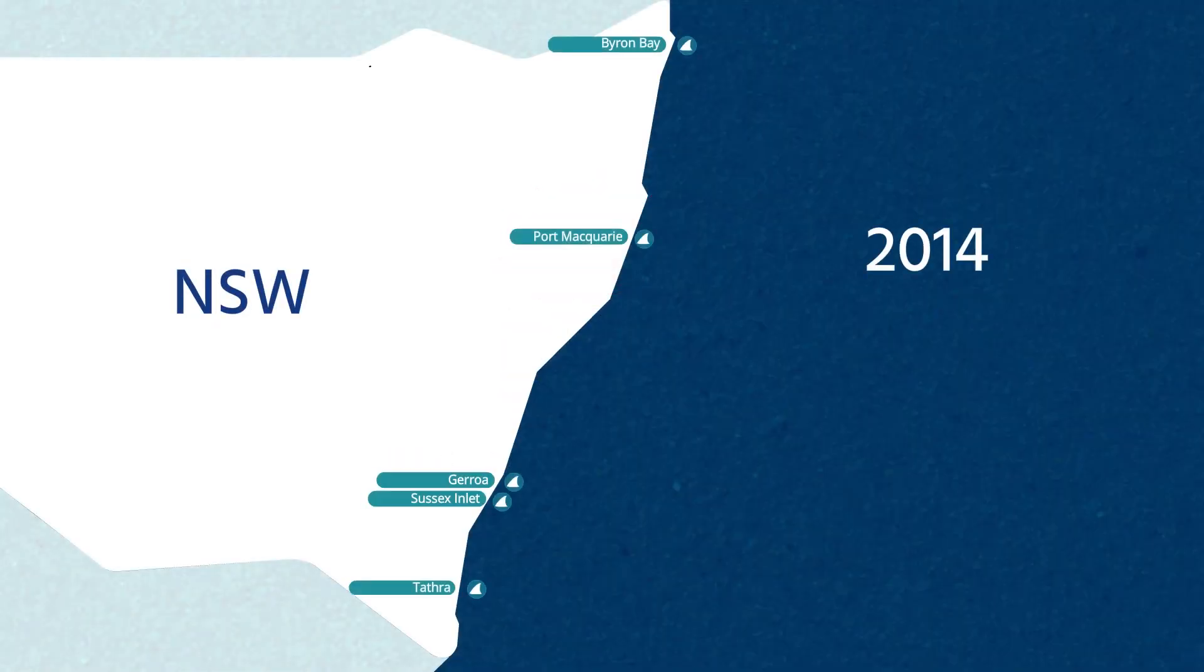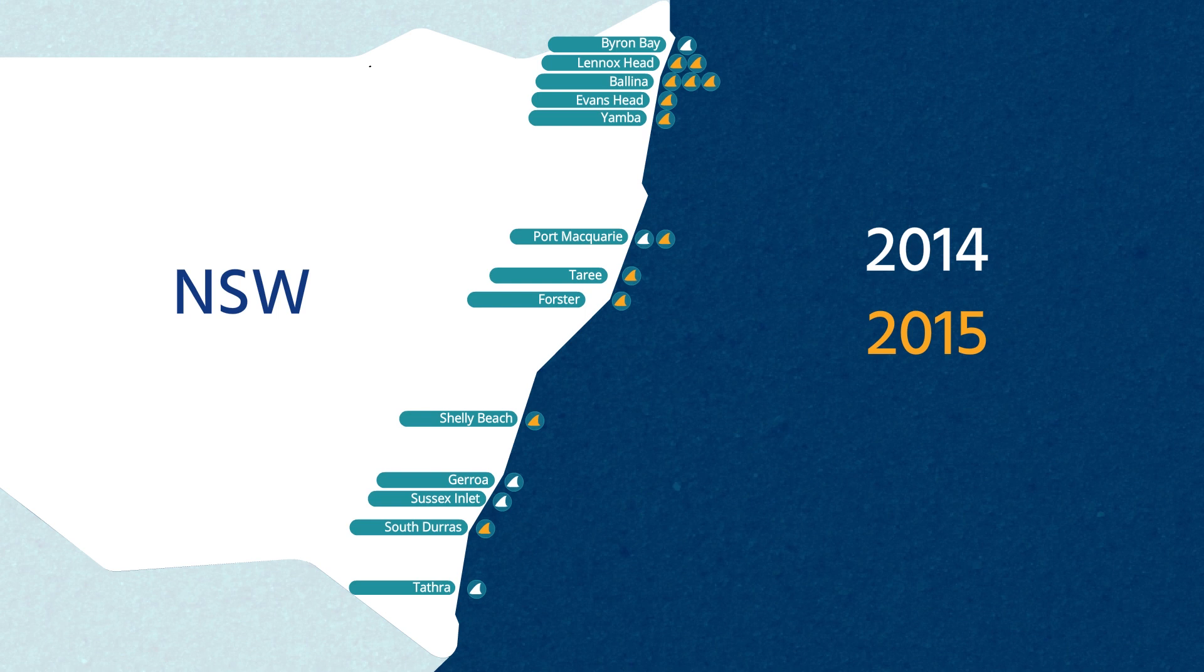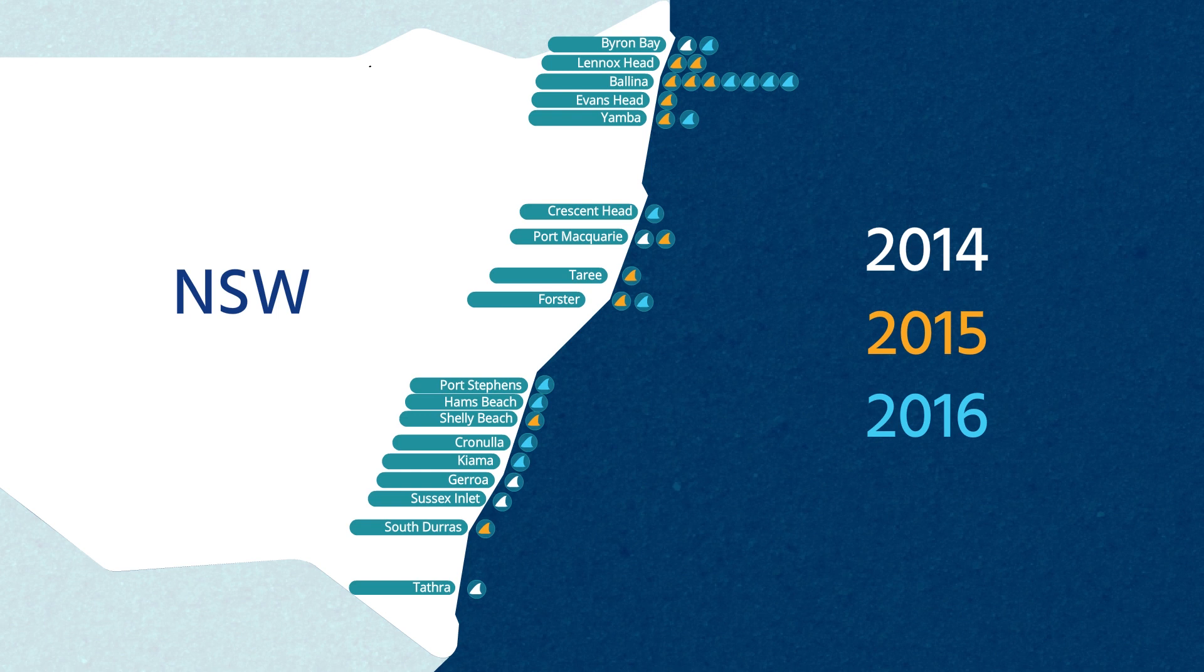The NSW Government's Shark Management Strategy was implemented in 2015 by the Department of Primary Industries in response to an increase in shark incidents in New South Wales.